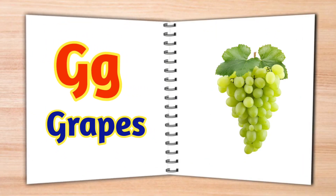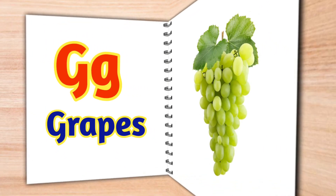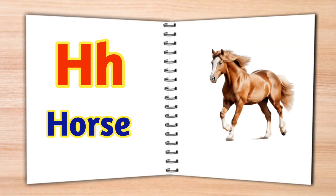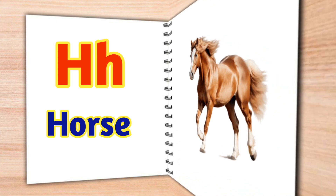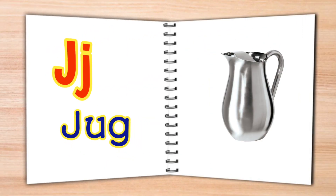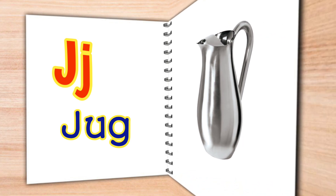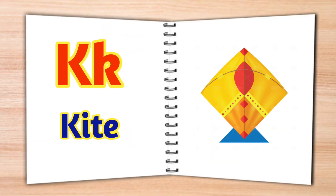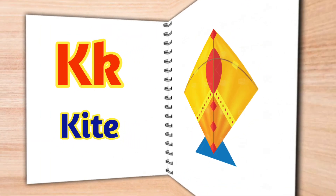G for draps, A for horse, I for ice cream, J for duck.